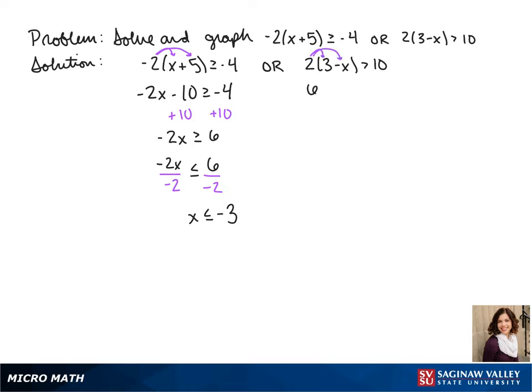On our other part we distribute the 2. So we get 6 minus 2x is greater than 10. We subtract 6 on both sides. We get negative 2x is greater than 4.